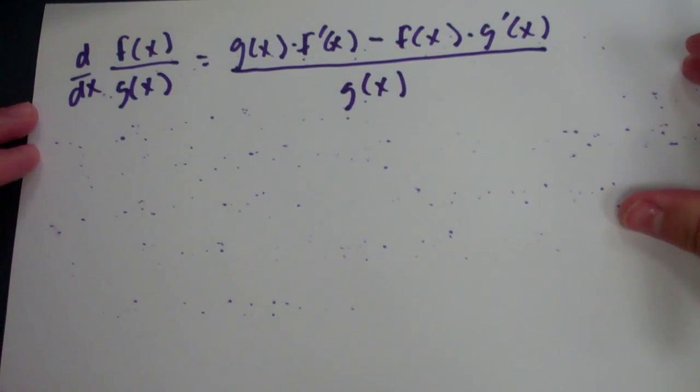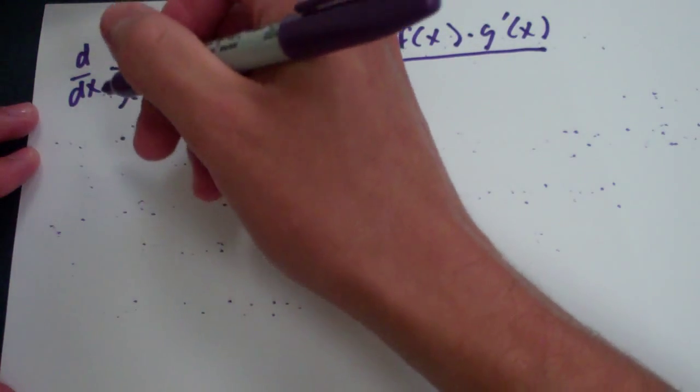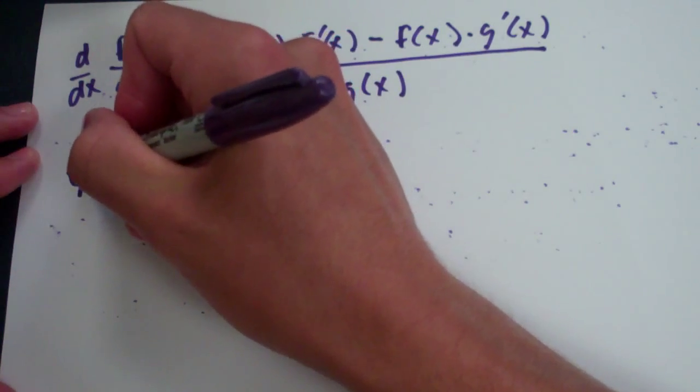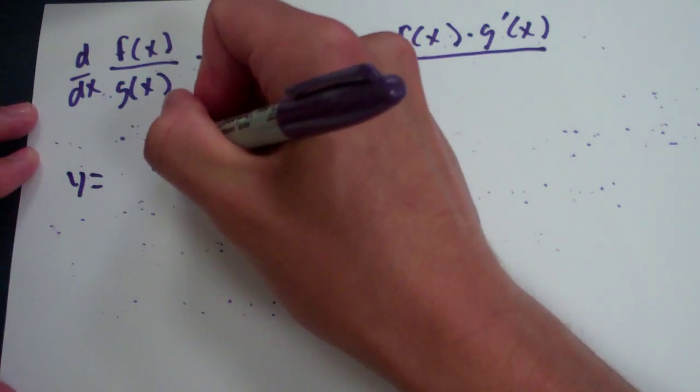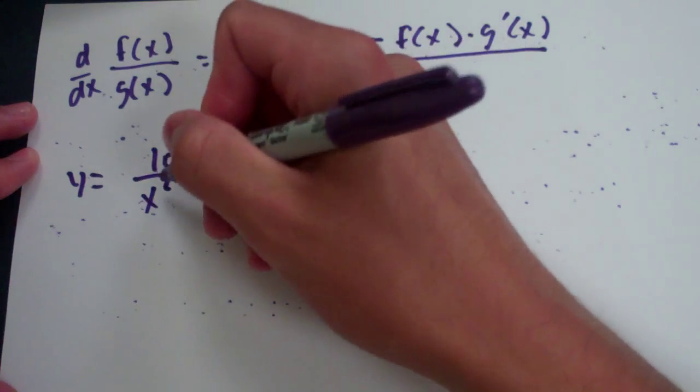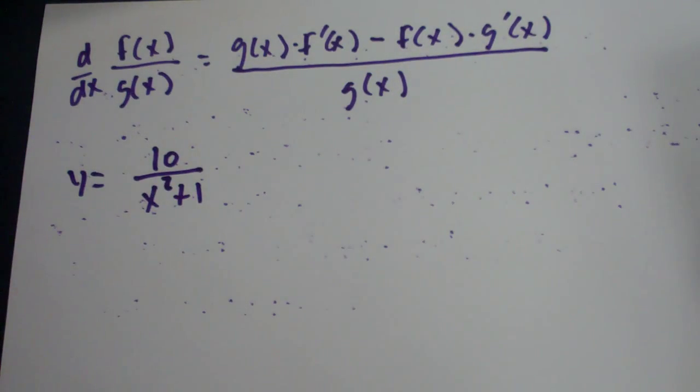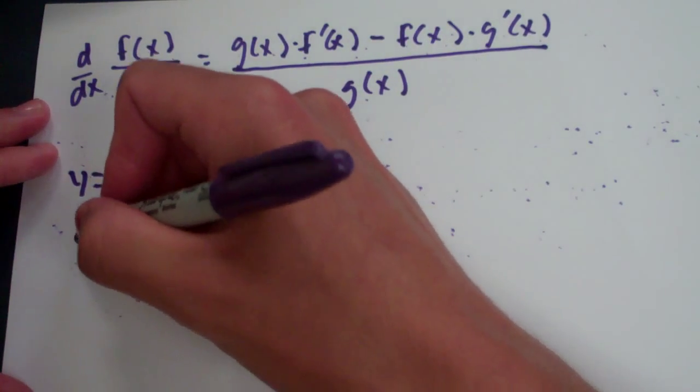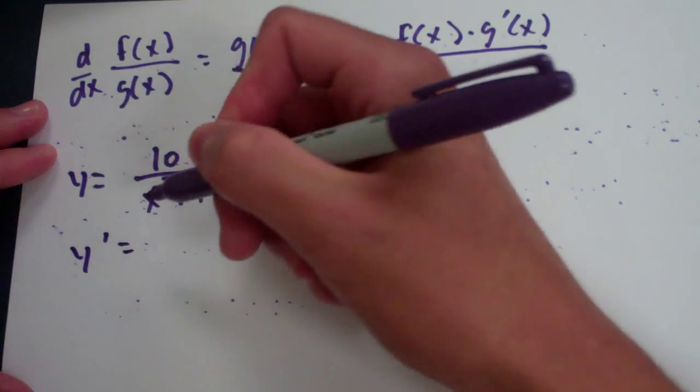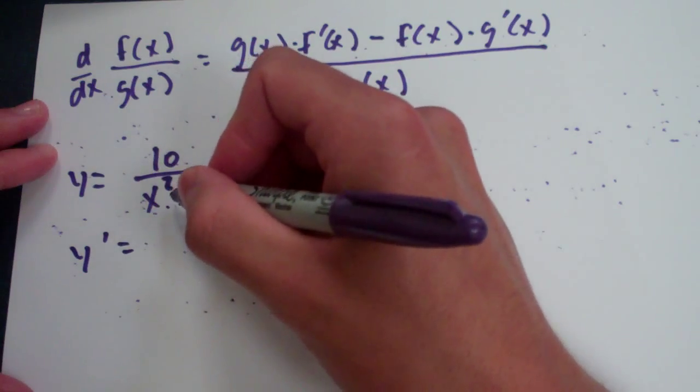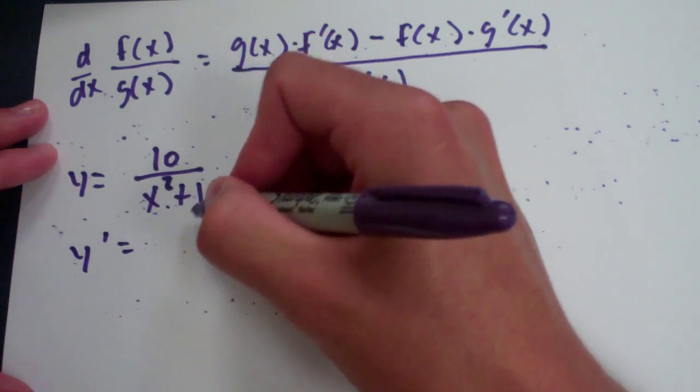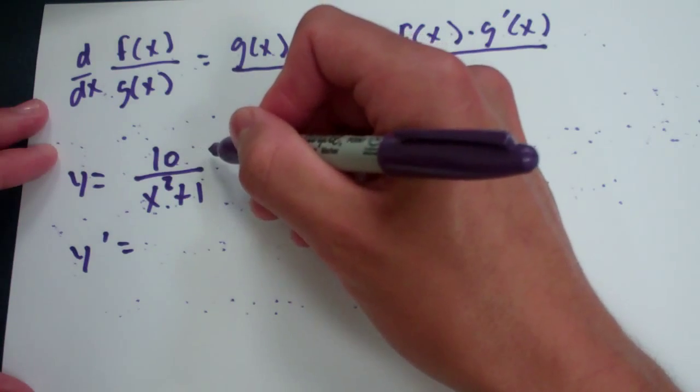Okay? Let's do one. How about this? We have y is equal to 10 over x squared plus 1. Now, let's try this. So, y prime is equal to, I'm going to go ahead and bring this top, the denominator down. I'm sorry. I'm going to bring the denominator up.